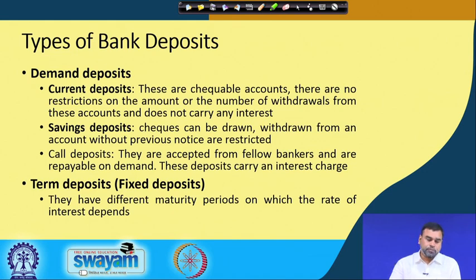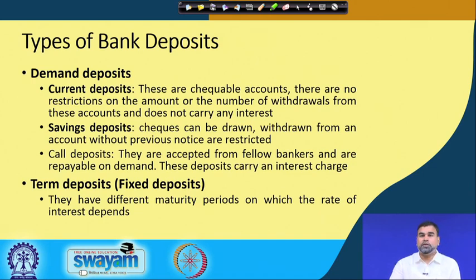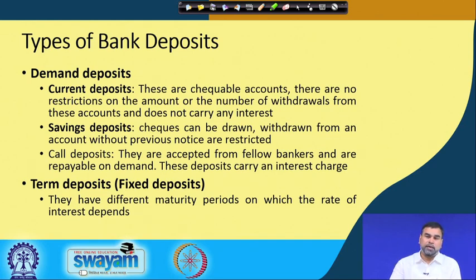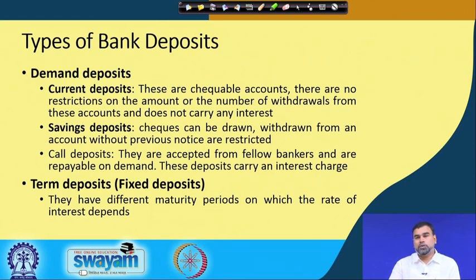Then we have savings deposits. A check can be drawn against savings deposits, and they generally carry interest of around 3.5 to 4 percent. There are also certain restrictions in terms of the amount of money withdrawn and the number of times money can be withdrawn in a particular period of time. That is basically what we call savings deposits or the savings account that a customer can open with a commercial bank.